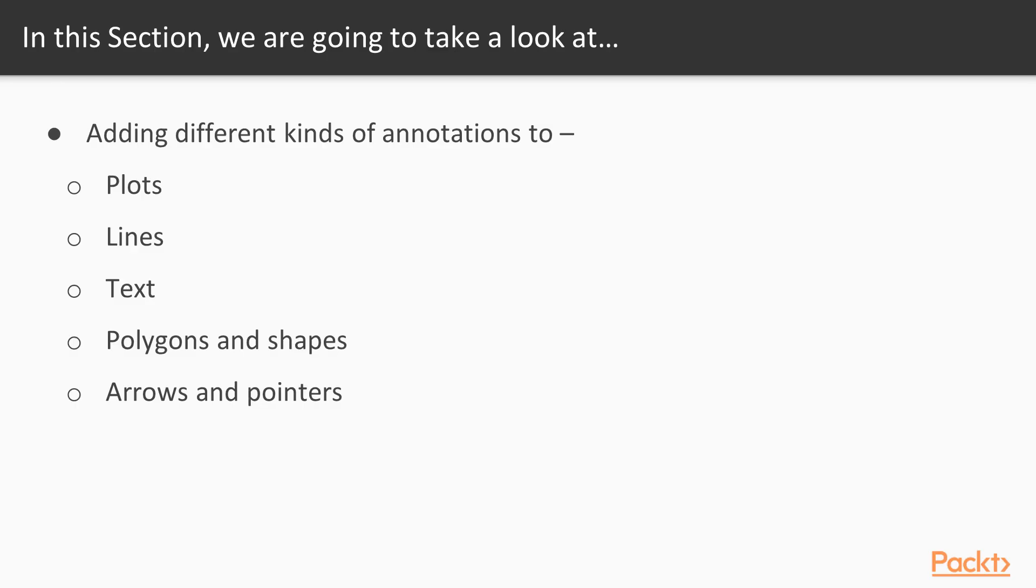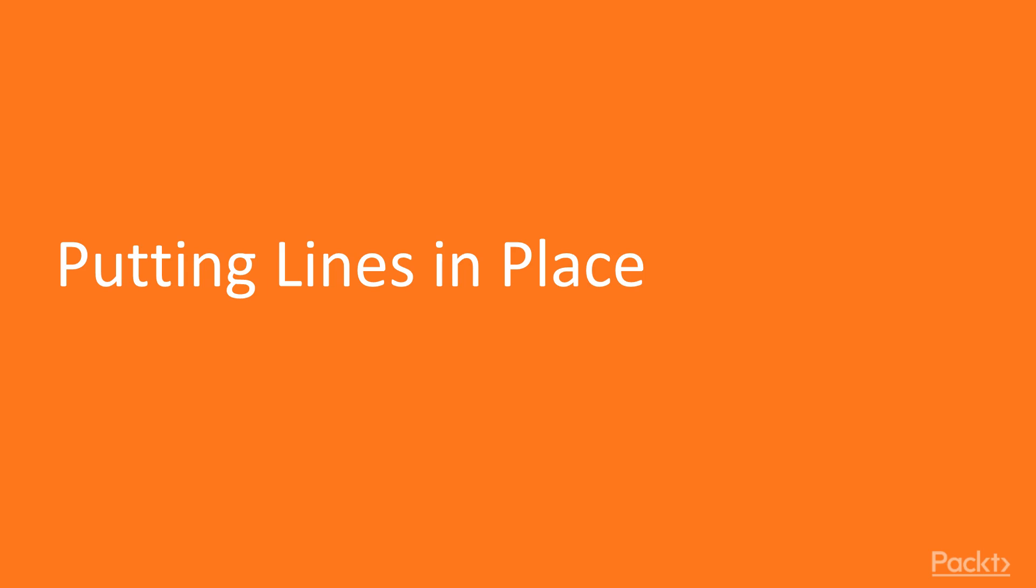In this section, we're going to take a look at how to add all kinds of different annotations and visual guides to our plots, including lines, text, polygons and other shapes, and arrows and pointers. We're going to begin with the simplest kind of annotation, putting lines in place.